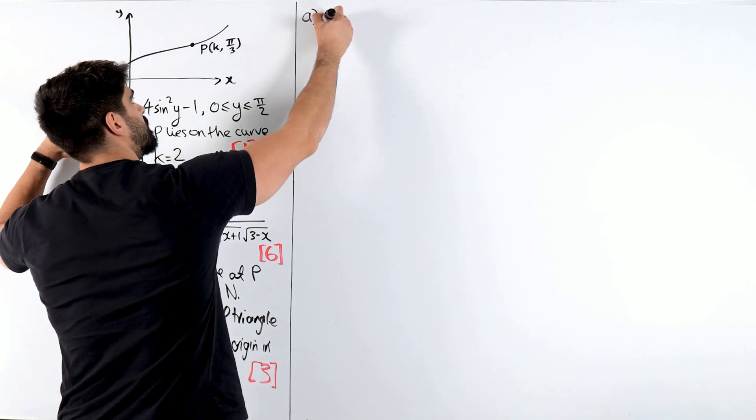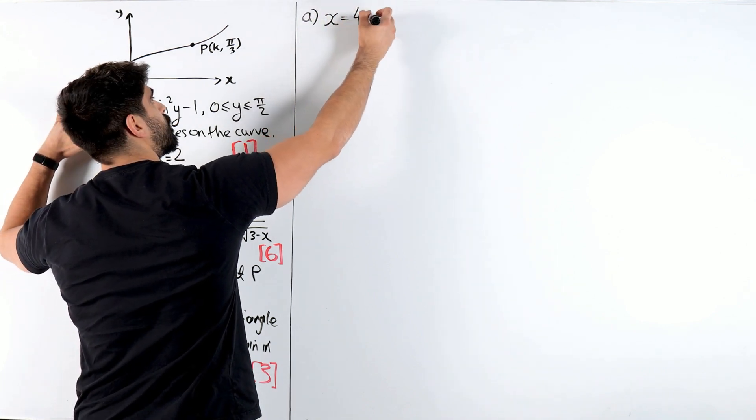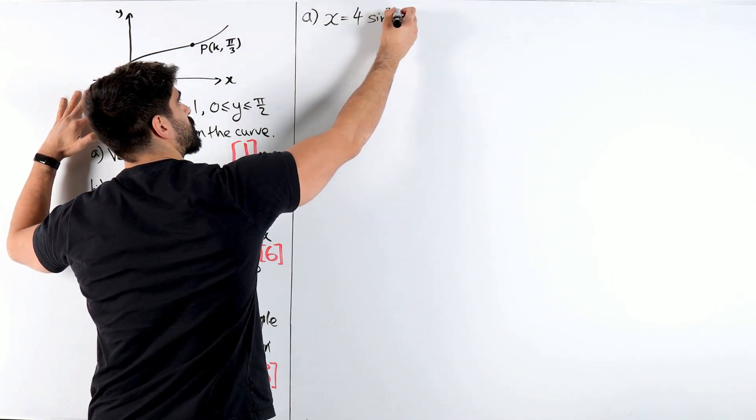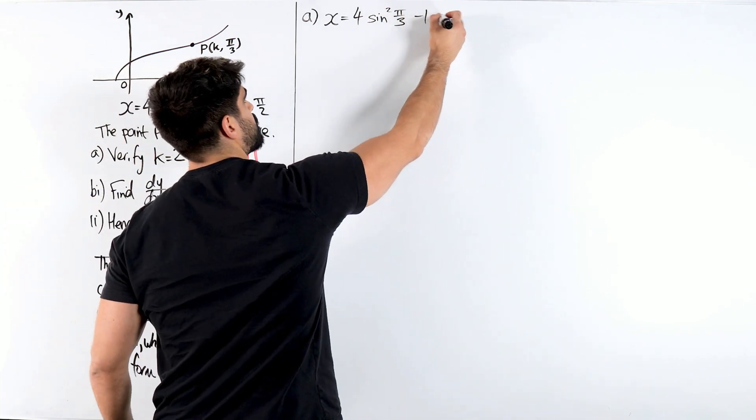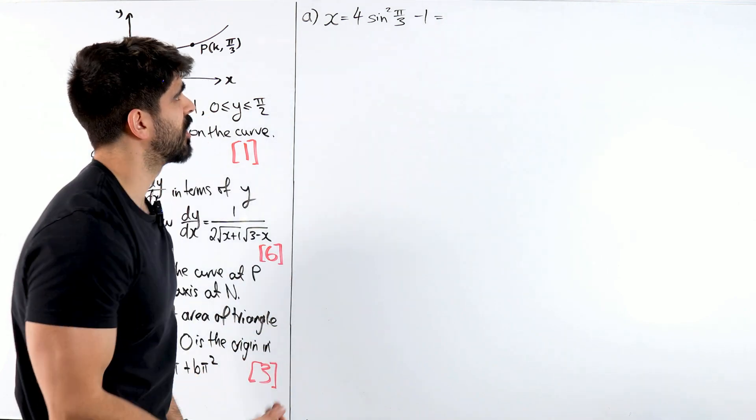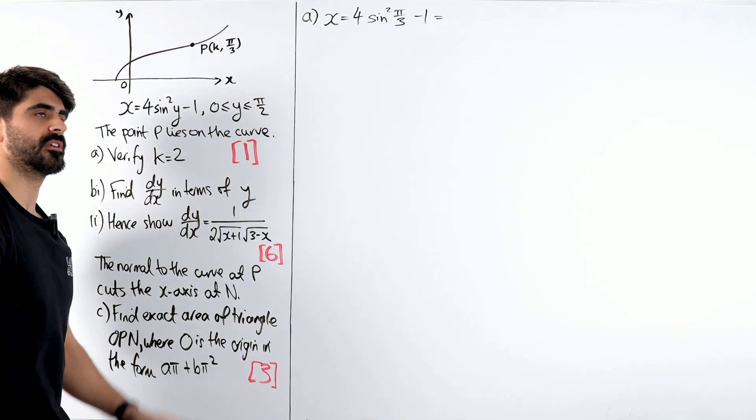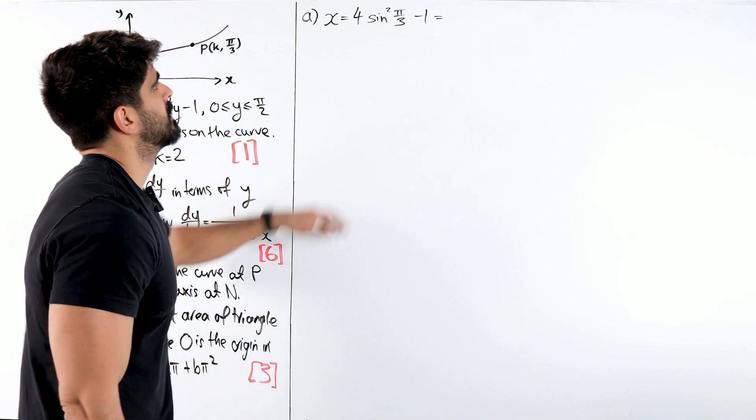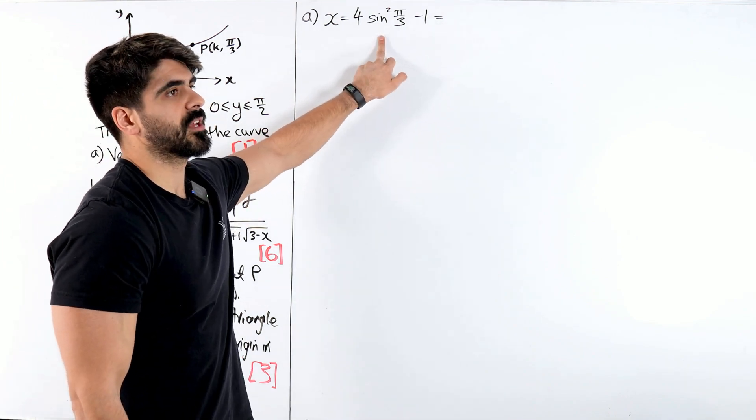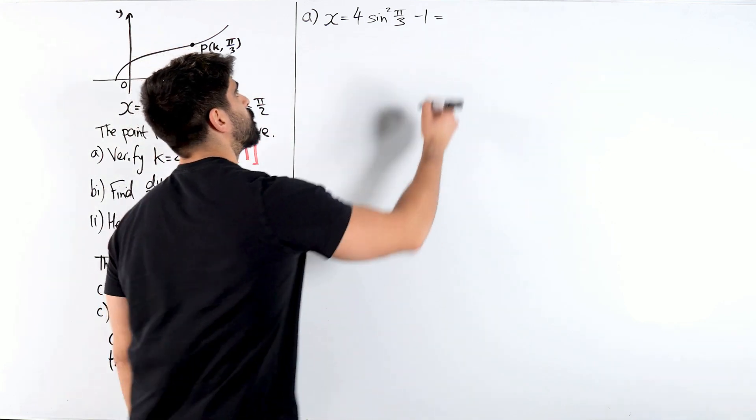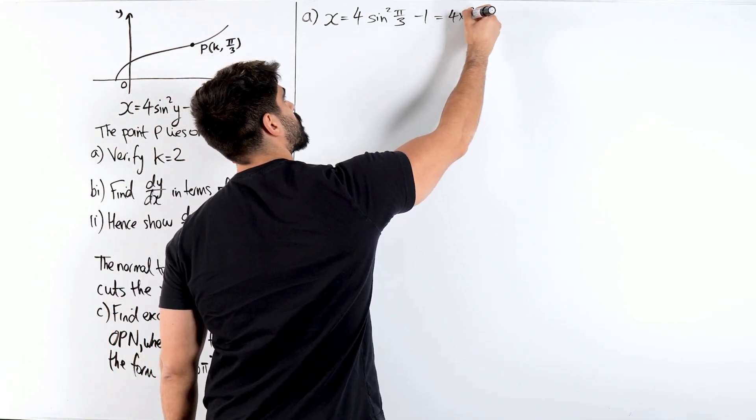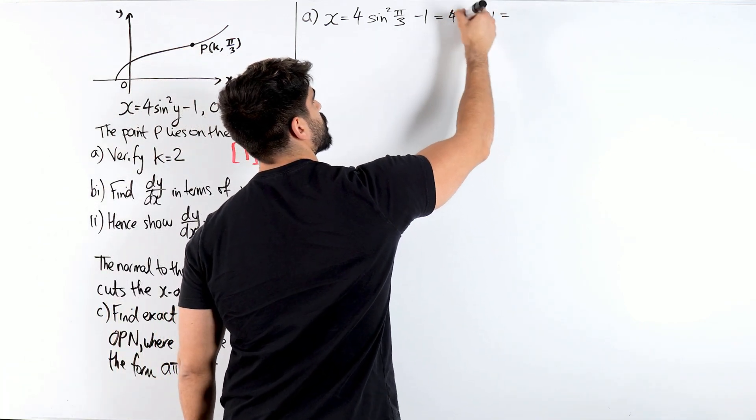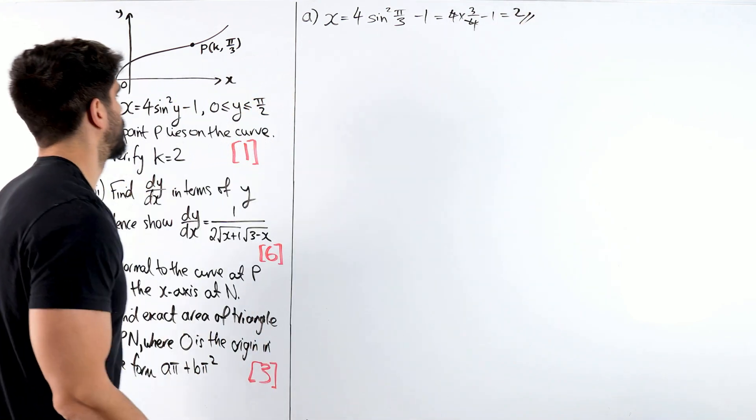So we get x is 4 sin squared pi over 3 minus 1. Sin of pi over 3 is root 3 over 2. So root 3 over 2, when you square that, you get 3 quarters. So you get 4 lots of 3 quarters minus 1, the 4s cancel, you get 2. That's verified.